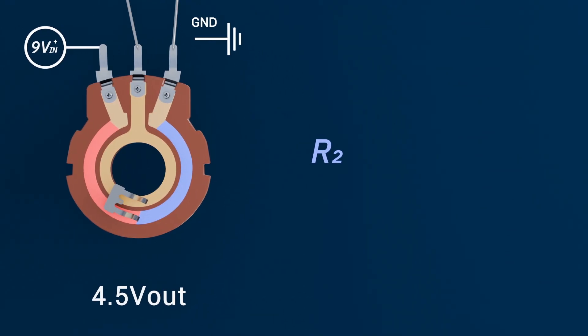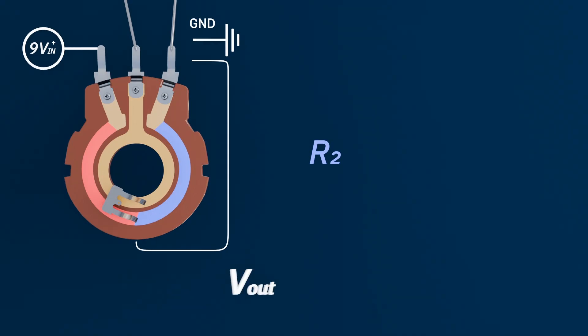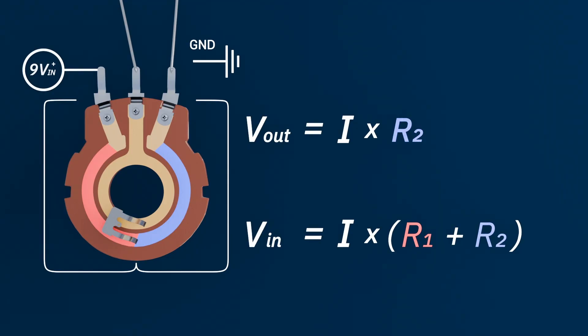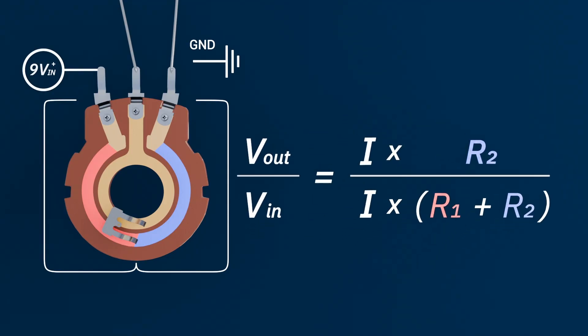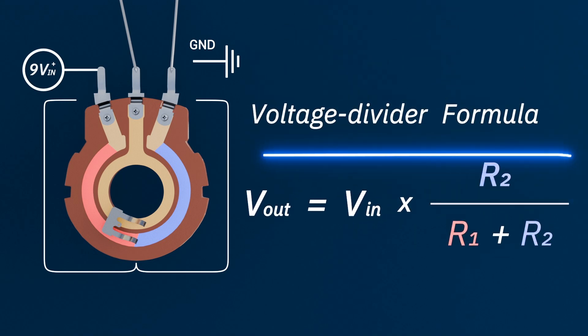And this proportional dropping of voltage is exactly what gives us the voltage divider equation. Since R2 is the section between the wiper and ground, the voltage at the wiper, our output voltage, is equal to the voltage drop across R2. So we apply Ohm's law to that section. If we divide V out by V in, the currents cancel out because it's the same current in both resistors, leaving us with the ratio. Multiply both sides by V in, and we get the voltage divider formula.